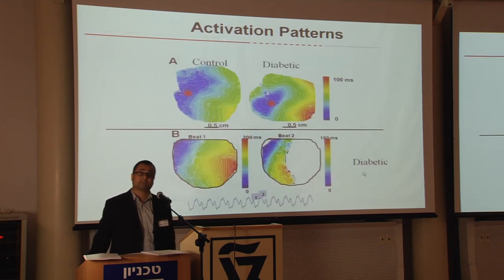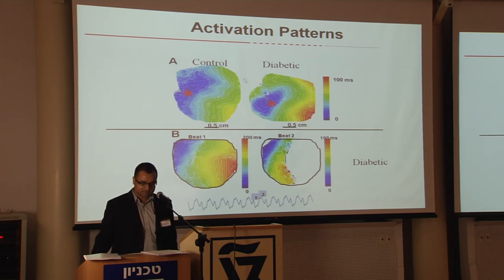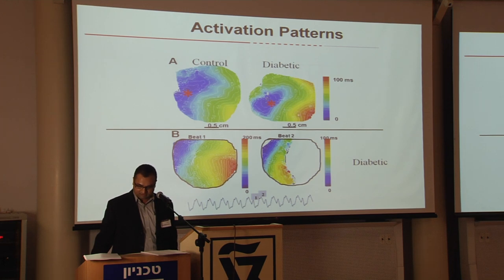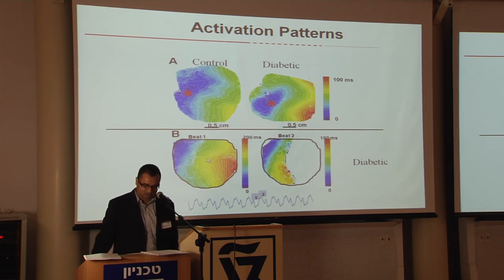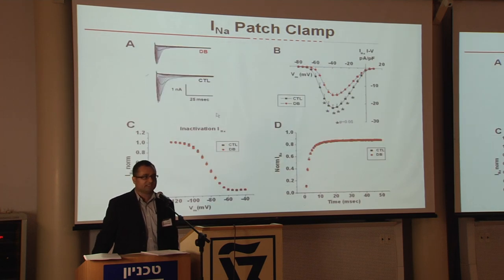To show an example of the activation patterns: this is the activation pattern in a control rabbit ventricle, and these hearts were all paced at 250 milliseconds basic cycle length. The propagation is faster in control hearts compared to diabetic hearts — it takes much longer for the impulse to propagate in a diabetic heart. You also often see two-to-one propagation patterns with conduction blocks occurring in diabetic hearts, which you rarely see in control hearts.